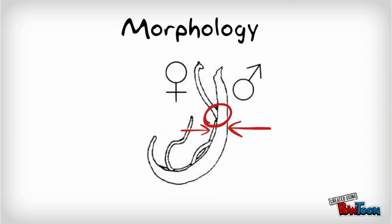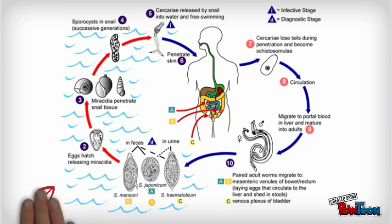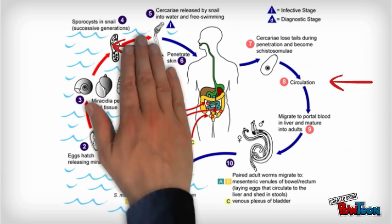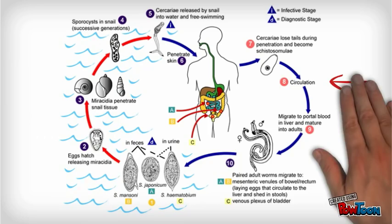Life cycle: First, the eggs hatch releasing miracidia. The miracidia penetrate the snail tissue and after two generations of replication, a fork-tailed cercaria emerges into the water. The cercaria penetrates the skin and loses its tail to become a schistosomula, which then enters circulation.